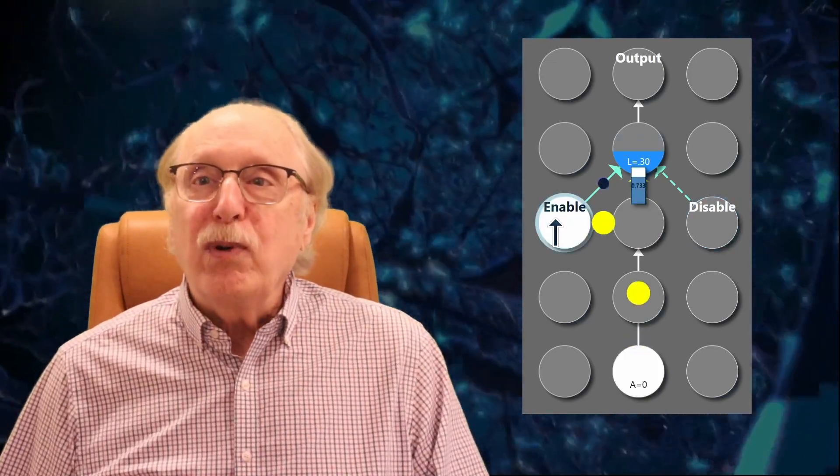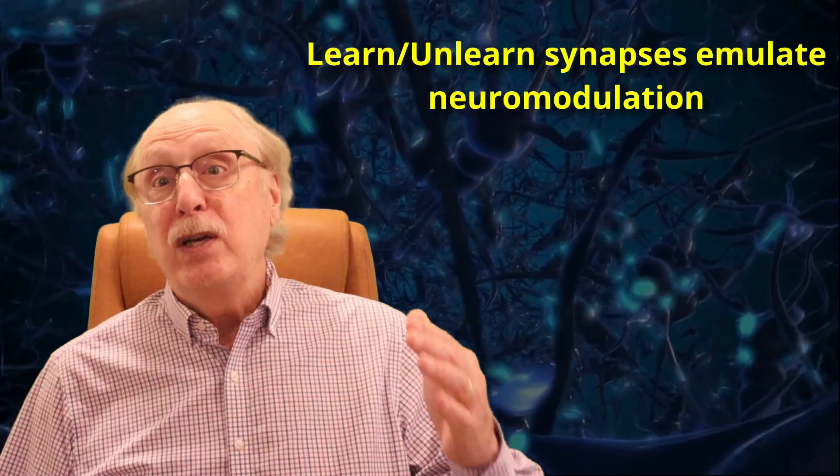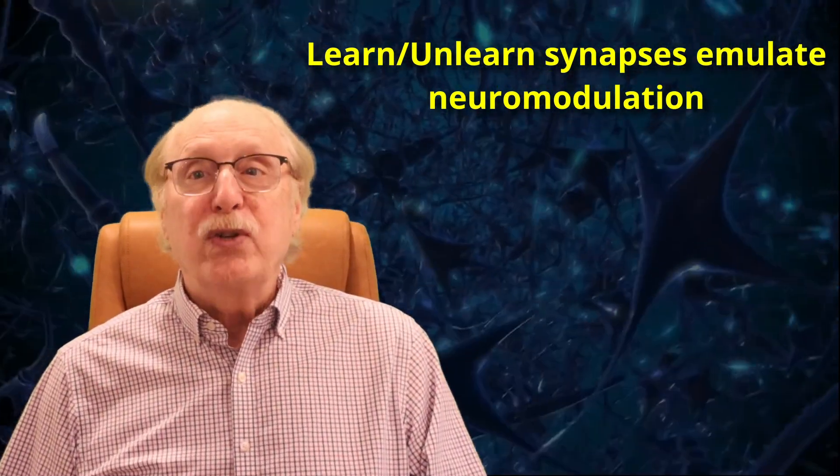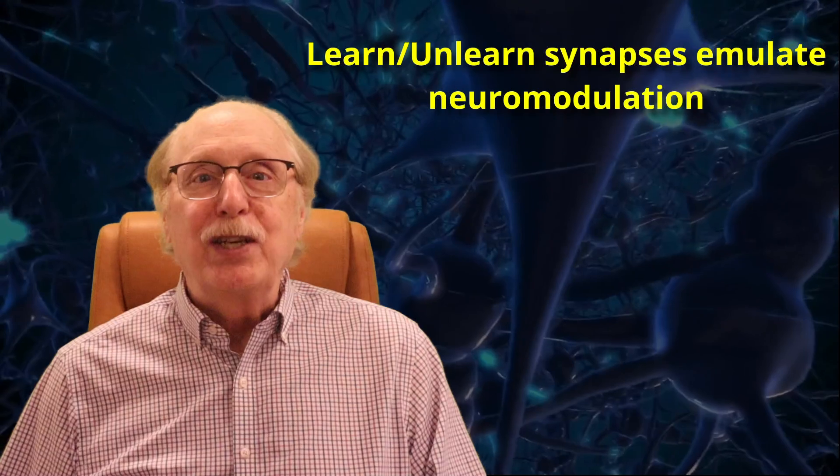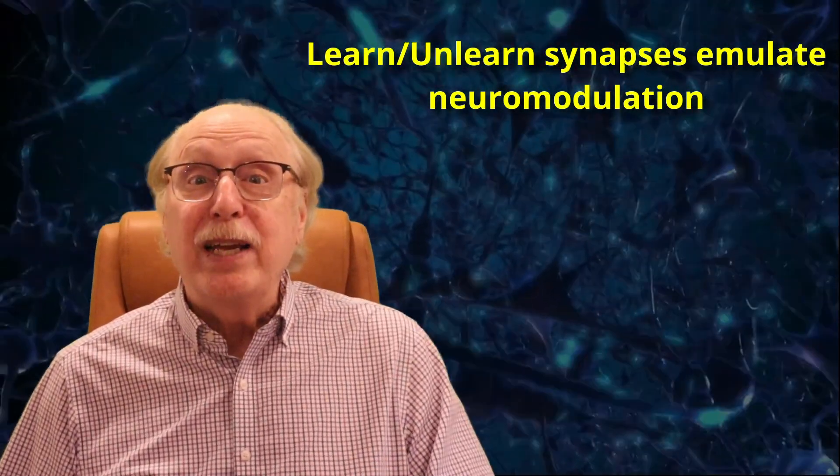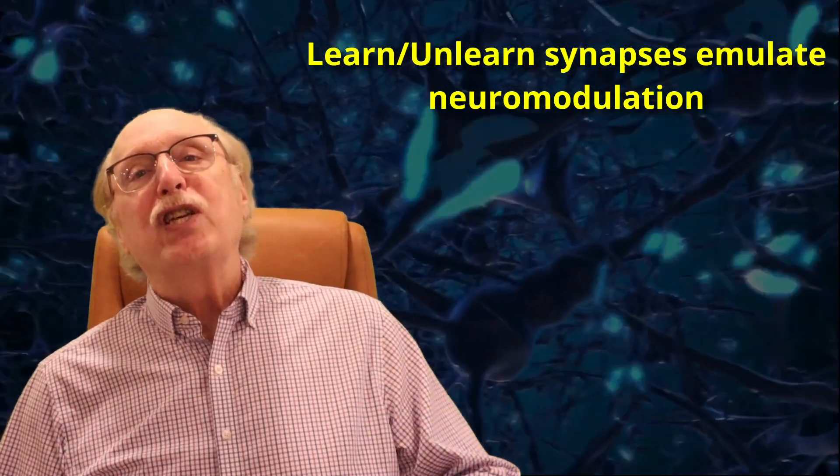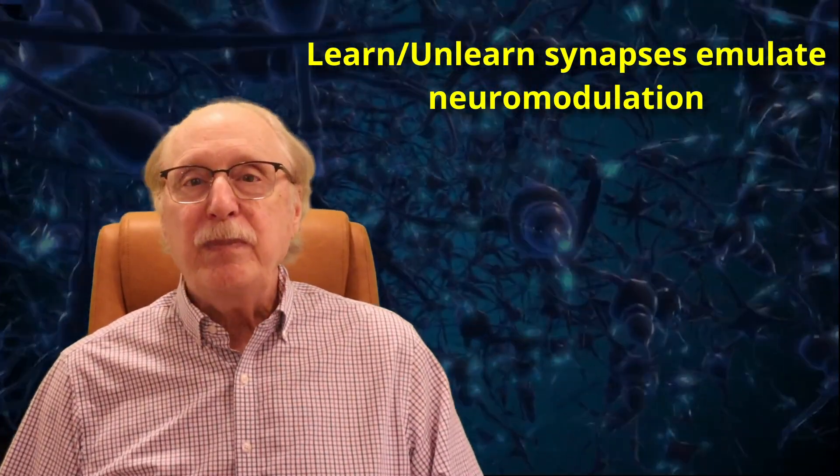Of course, in real brains, plasticity isn't always on. It's gated by neuromodulators like dopamine, acetylcholine, and neoepinephrine. These chemicals determine when the brain is allowed to learn. You don't want your brain constantly rewiring itself every time neurons fire. That would be chaos. So plasticity is context-dependent. It only happens under the right chemical conditions. Our learn synapse mimics this behavior. It only allows synaptic change when the learn signal is active. In your brain, these neuromodulators can either enhance or inhibit learning simultaneously in millions of cells. In our simulations, we can do the same thing with an uber-neuron with millions of learned connections.